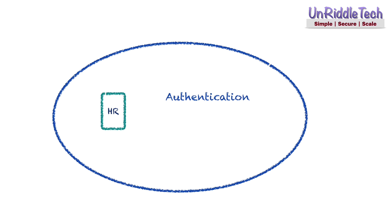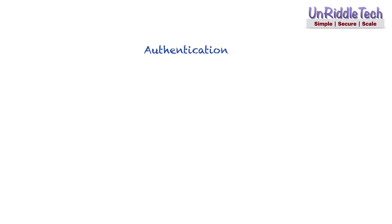Once authenticated, you may need to provide appropriate access to users. The process of providing permission to access a resource is called authorization. There are multiple methods to verify user identity. One method is to verify based on something the user knows, like passwords and PIN numbers. A second method is to verify based on something they have, like a hardware token or a software token. A third method is to verify based on something the user is, like fingerprints or facial recognition.